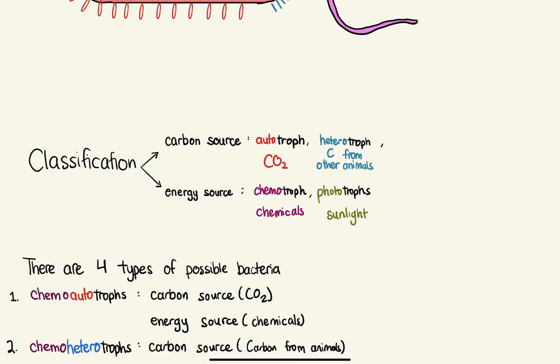And then we have the energy source, which means that if it's a chemotroph, it's getting its energy from chemicals. And if its energy source is from sunlight, it's called a phototroph. And remember that the word troph in Latin just translates to eat.